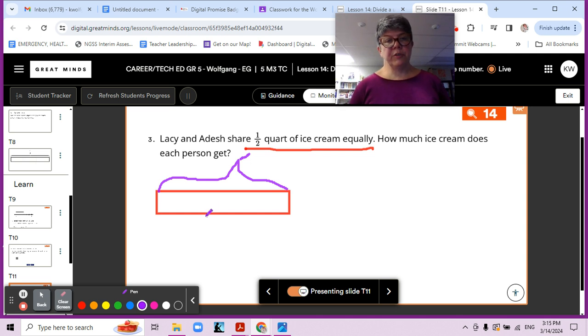And there's two people sharing it. So, that means we're going to have half of that. So, this is a half quart of ice cream. And each person is getting one half. So, one half divided by two.